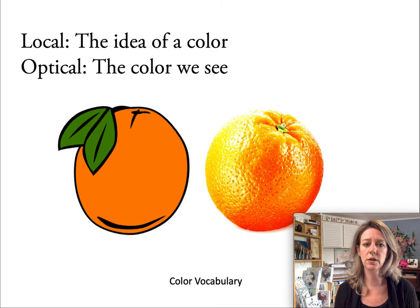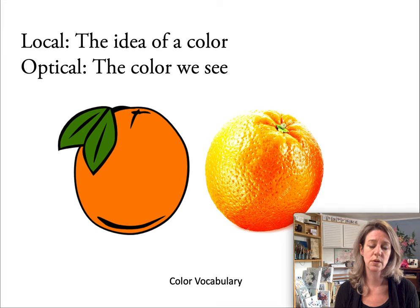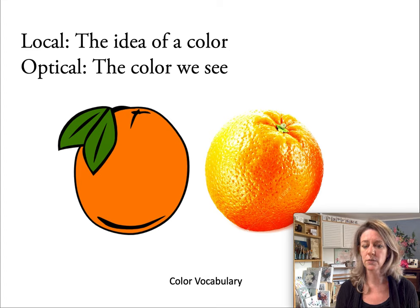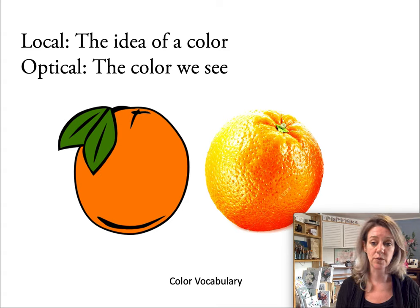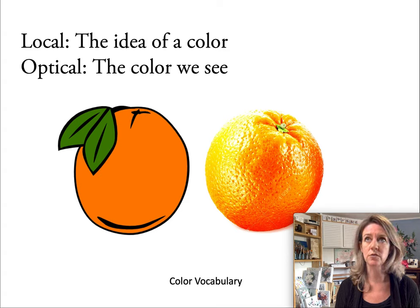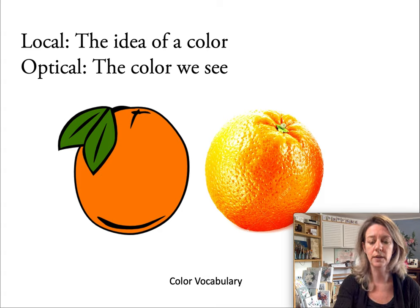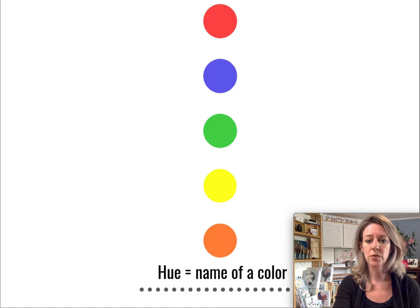Local color is the idea of what you know — I know that an orange is orange. Optical color is what you actually see when working from observation. In our projects we'll probably be working more on a local level — the conceptual idea of a color — rather than observationally. If you were in a figure painting class working from observation, you'd be working optically. So just to recap: hue is the name of the color — red, blue, green, yellow, orange.